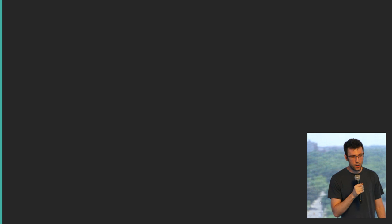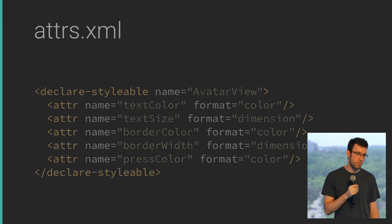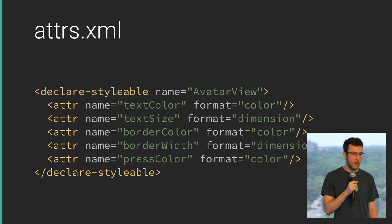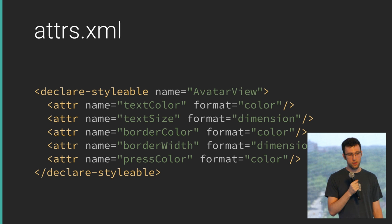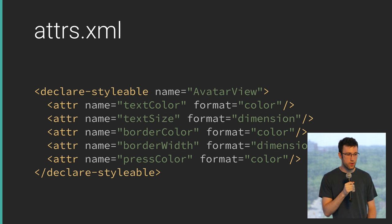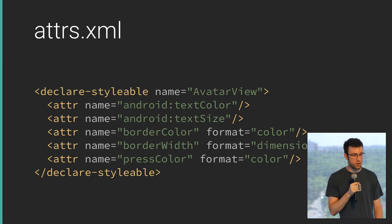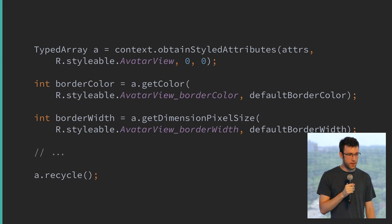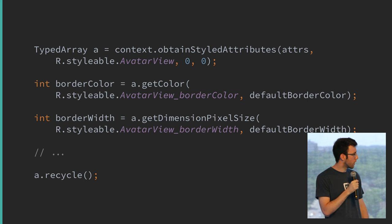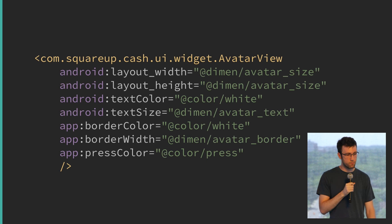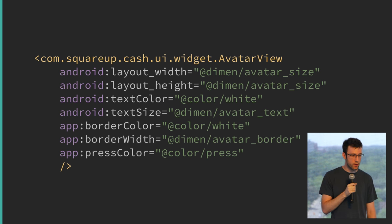Currently the view has colors set statically. To make it customizable, in your attrs file you can define configurable dimensions: text color, text size, border color, border width, and press color. Note that text color and text size are already defined in the Android namespace, so you can just reuse those. Then in your constructor, grab these parameters from the XML with defaults in case they're not defined. In your layout XML you can then customize all these variables for each usage of the view.